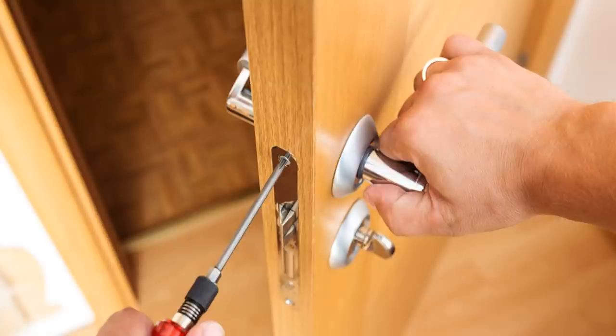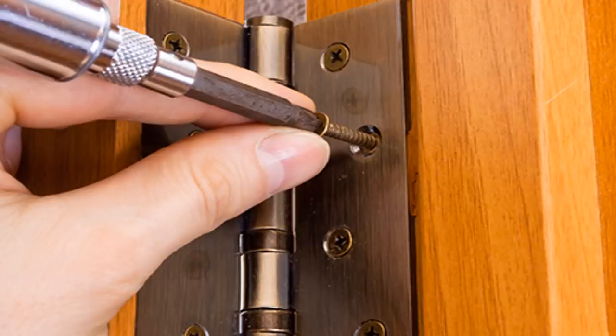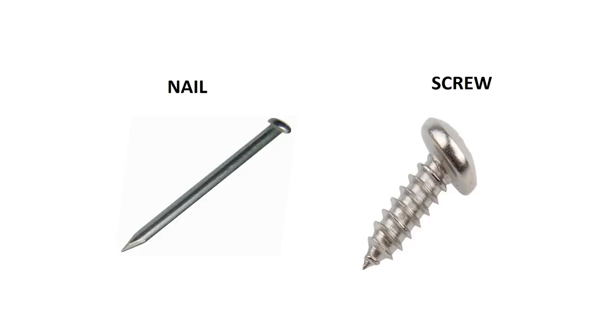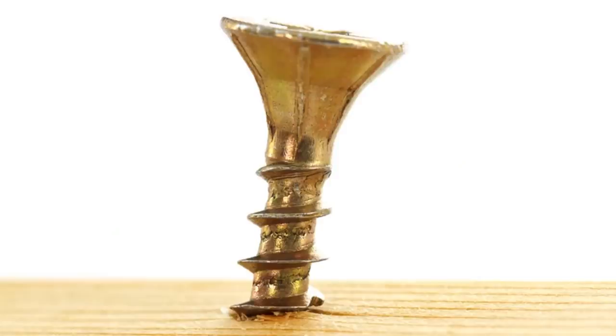Screws are very useful for holding things together. They can be used to lift very heavy objects and tighten things too. Nail and screw are not the same. Screw has ridges around the shaft but nails don't have ridges. It is harder to drive a screw into a piece of wood because the ridges on the screw create a lot of friction and resistance.